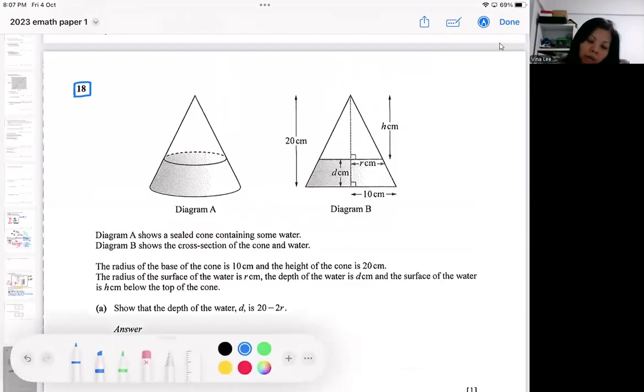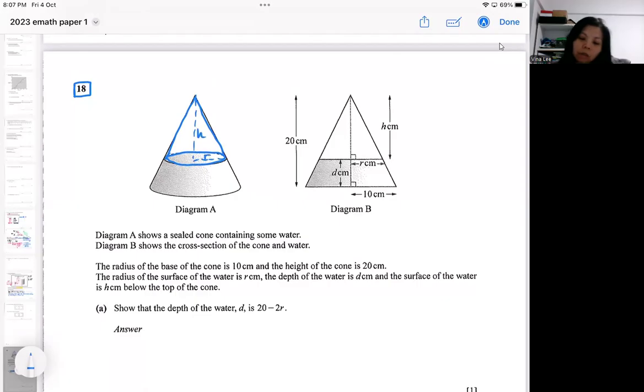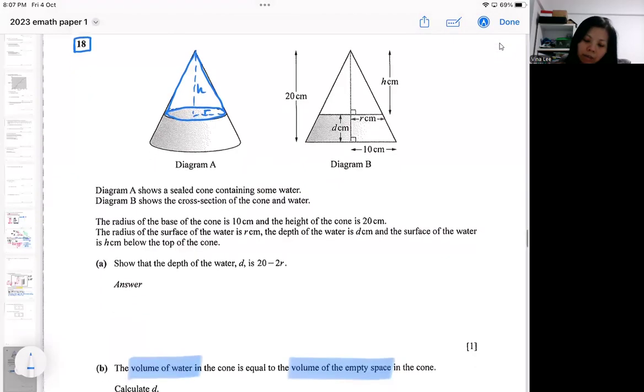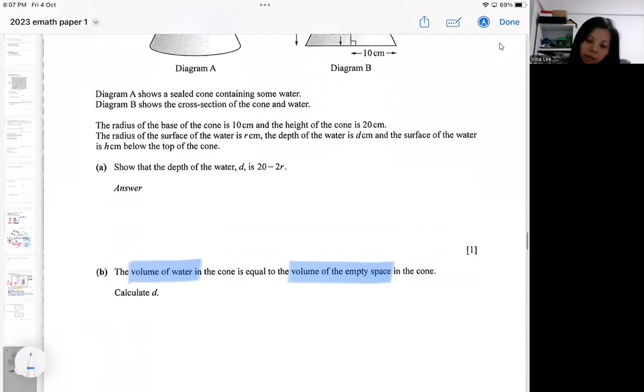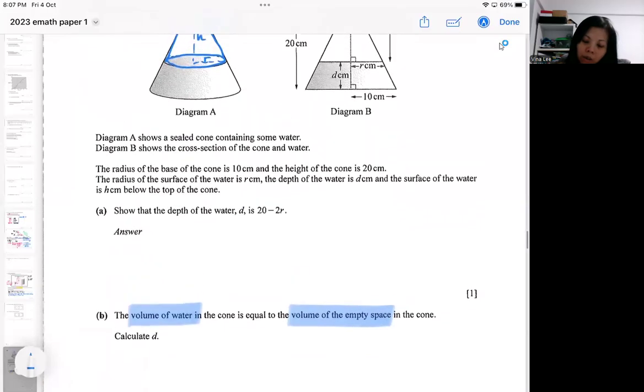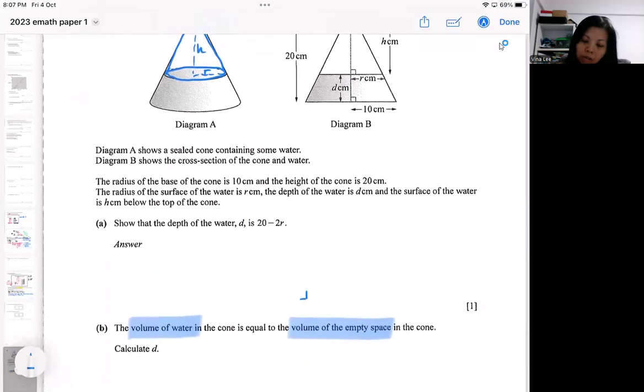So for example, I think the easiest one is actually I want to get the empty space, because the empty space is a cone. So this is the empty space with the height and the radius. So if I want to calculate the empty space, so then that will just be like one third times the base area times height.